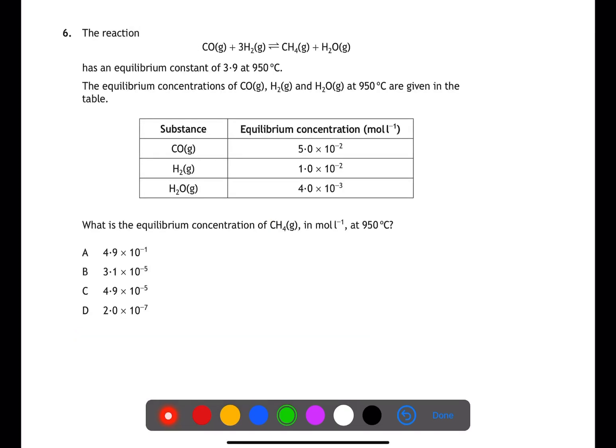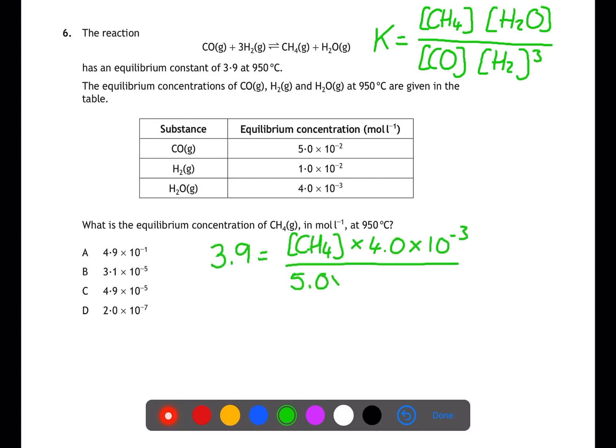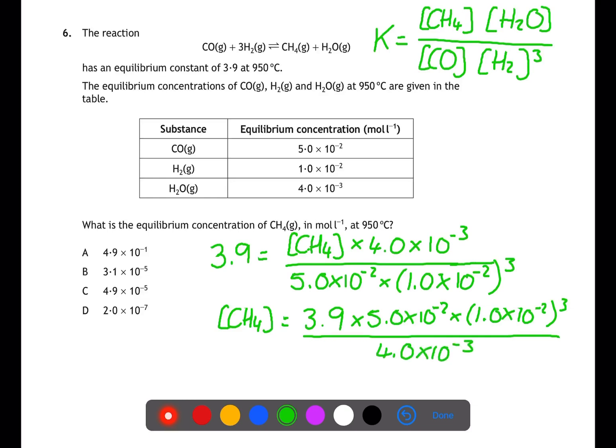For question six, we're looking at equilibrium constant. At the front of the data book, you have the generic equilibrium constant equation. We can use this to write the equilibrium expression for this reaction. Concentration of methane multiplied by concentration of water, which are the products, divided by the concentration of carbon monoxide multiplied by the concentration of hydrogen cubed. By inserting the numbers which we have in the table and the equilibrium constant that's been given, 3.9, we can rearrange this to be able to find the concentration of methane at 950 degrees.